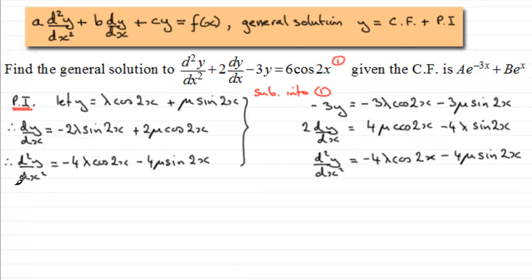So let's just border this off, and we'll say we'll compare the cos2x terms. We'll look at the coefficients there. So as I say, we've got minus 3 lambda minus 4 lambda. That's minus 7 lambda.